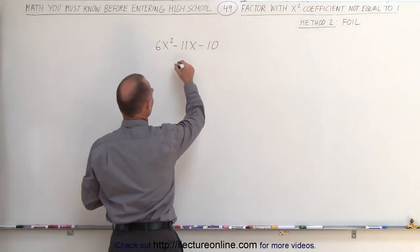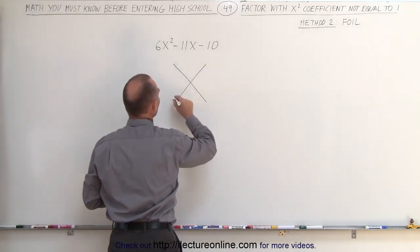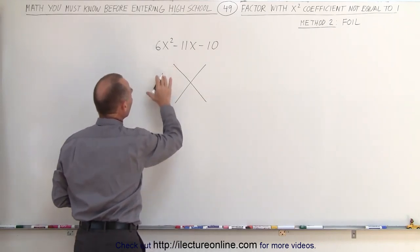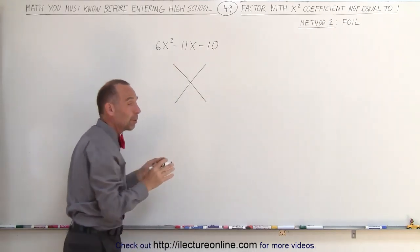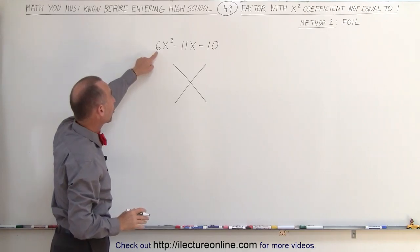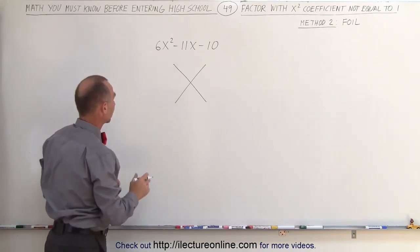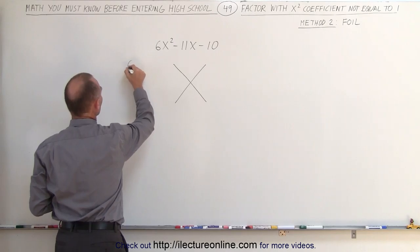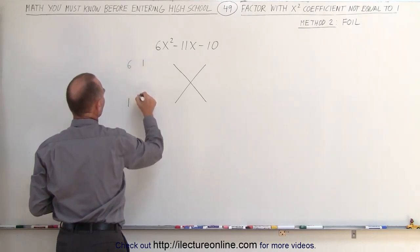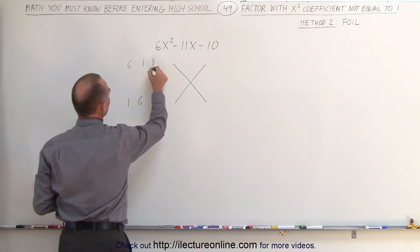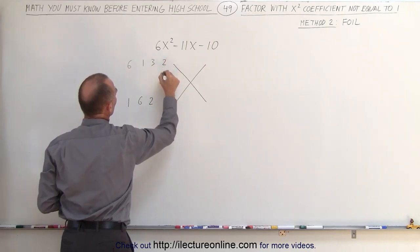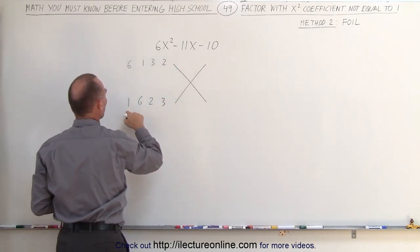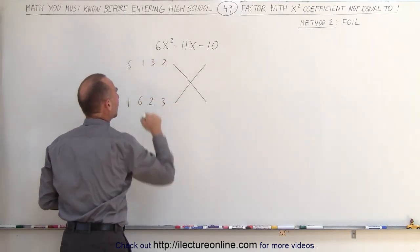So what we do is we draw a big FOIL, and then on the left side we write all the combinations of numbers so that when we multiply them together we get the coefficient of x squared, we get the number 6. The combinations are 6 and 1, 1 and 6, 3 and 2, and 2 and 3. In each case when we multiply these two numbers together, we end up with a 6.